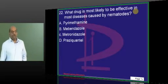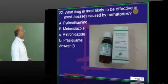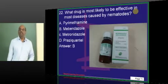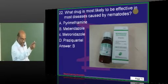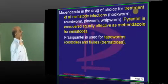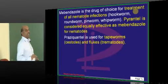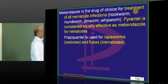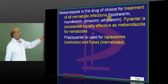For all nematodes, what is a universal drug? Typically, it is the mebendazole. Anybody thought praziquantel? Give me alternative answers. Very good. I am happy. Praziquantel is for the tapeworms, cestodes and trematodes, which are flukes.